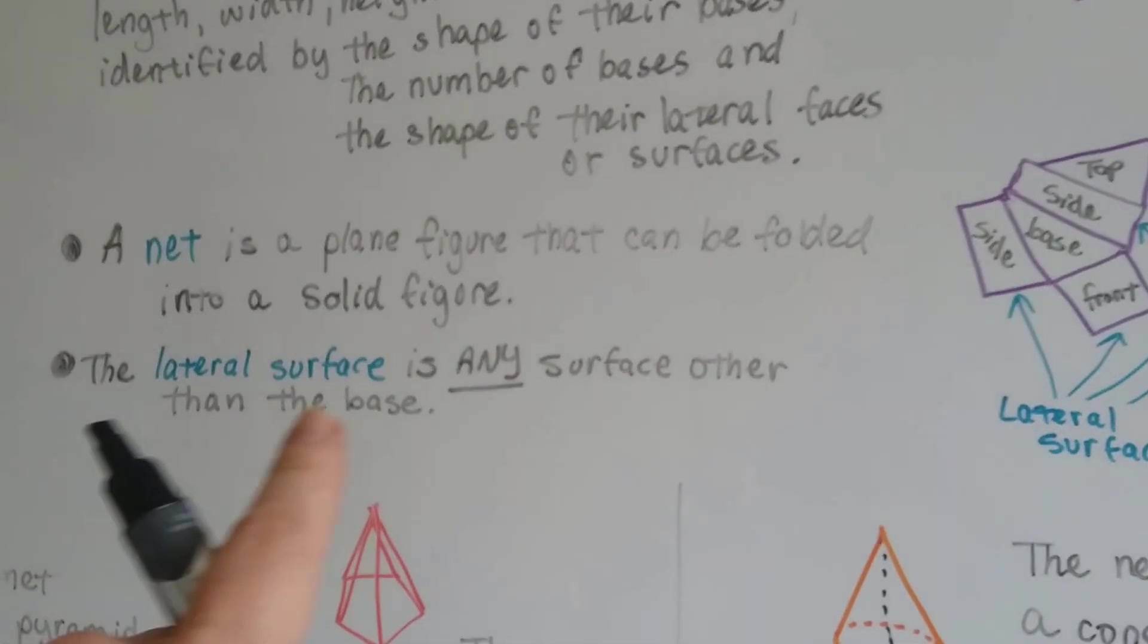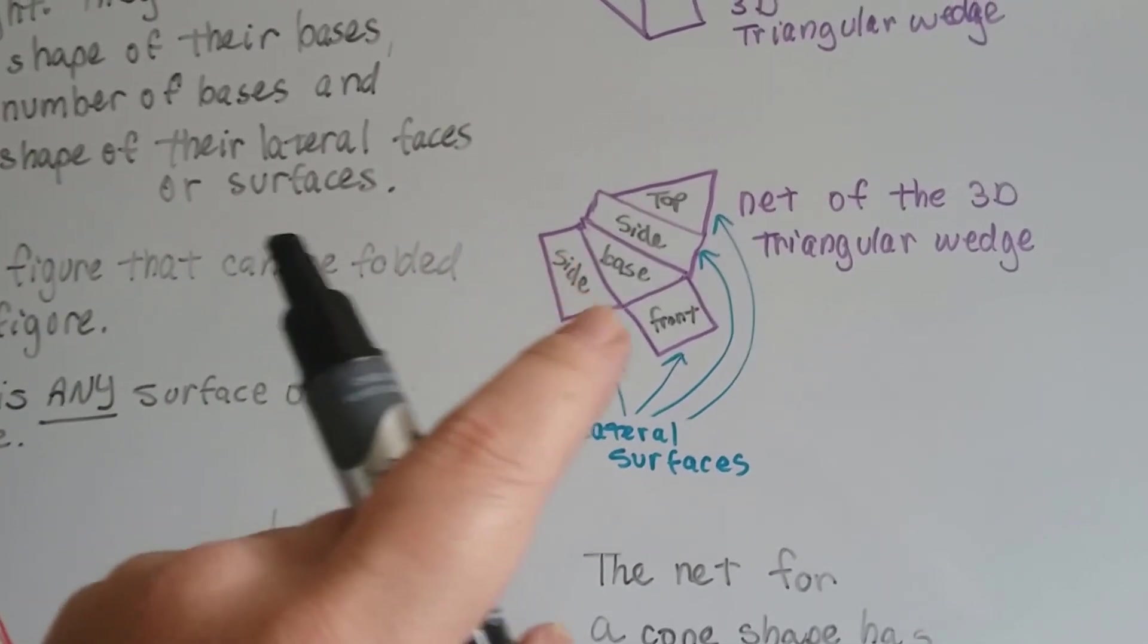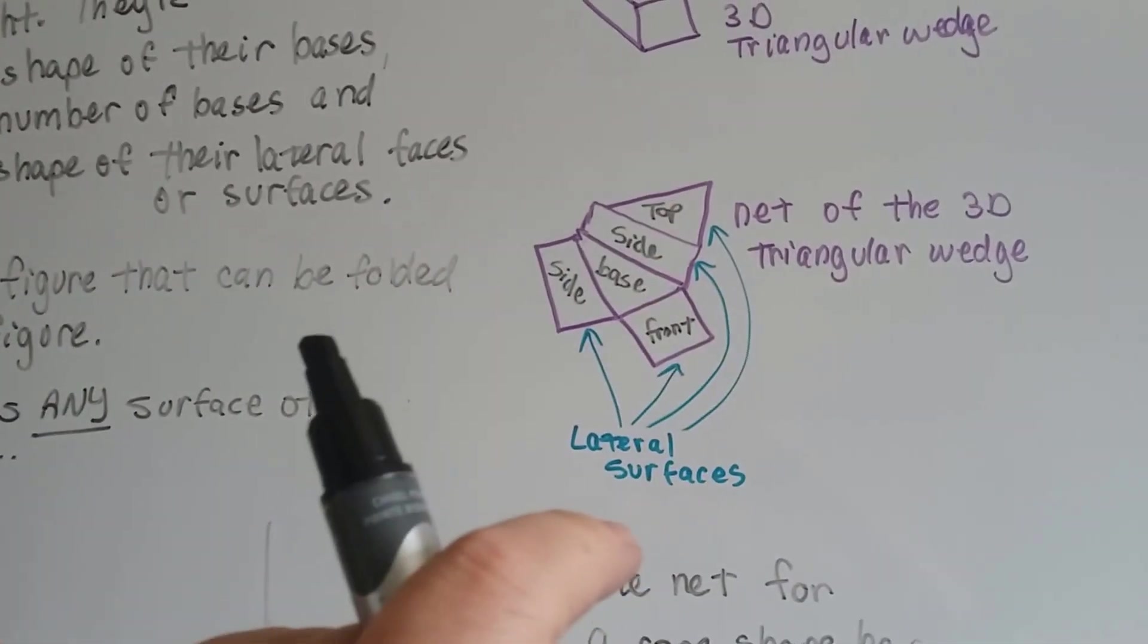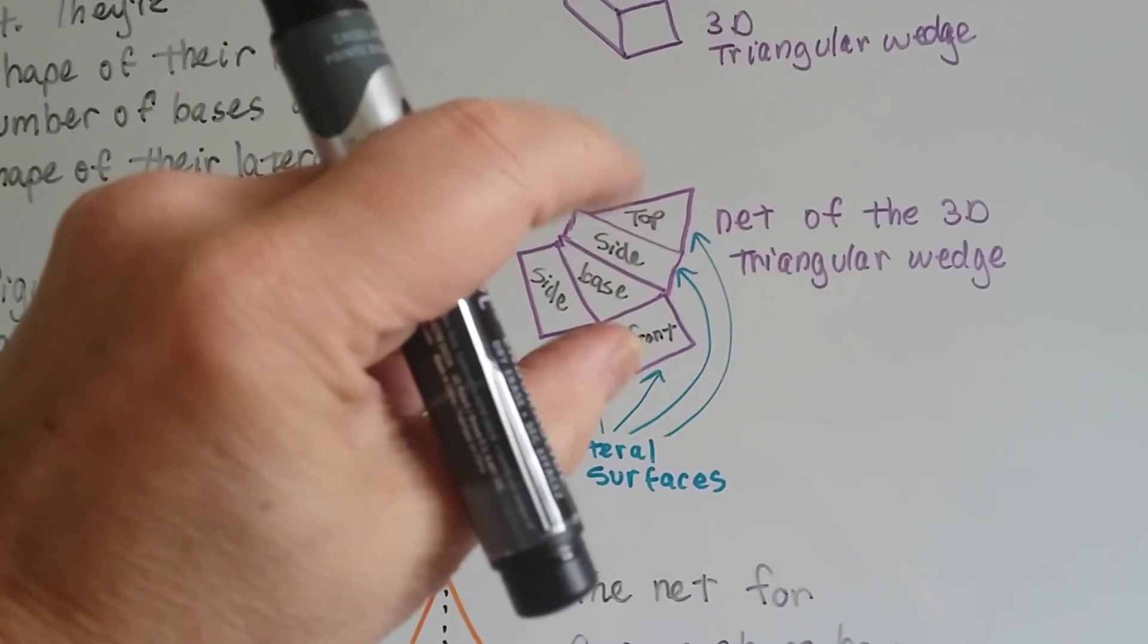The lateral surface is any surface other than the base. So it's got one, two, three lateral surfaces and two bases. A top and a bottom. Base 1 and base 2.